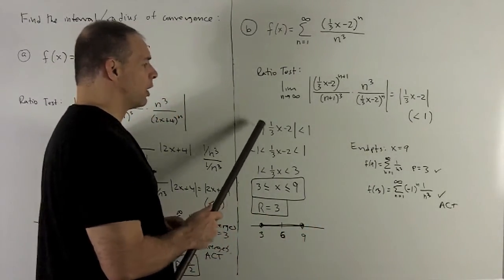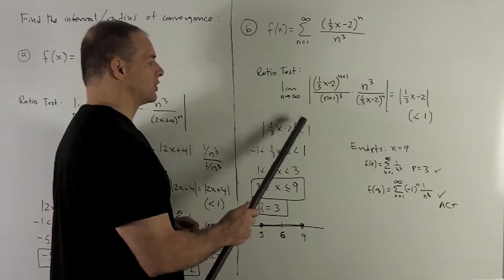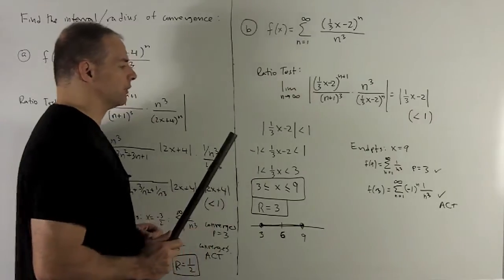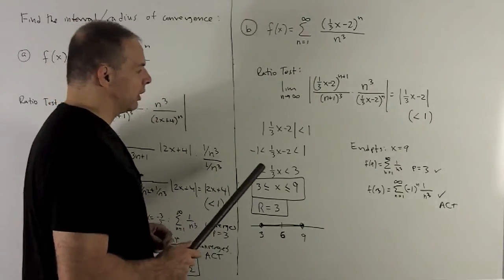So we take our 1 third x minus 2, strictly less than 1. The way we decode is just to put a minus sign on the other side, and then you can drop the absolute value signs.